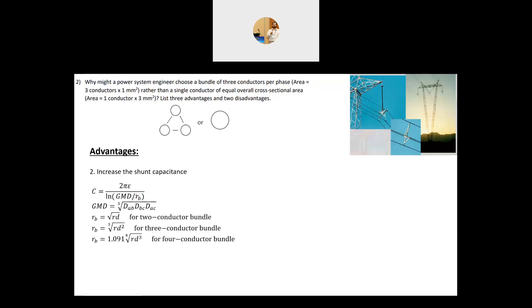The capacitance is 2 pi epsilon divided by ln GMD divided by RB, the radius of the bundle. Here we use the radius. In the inductance, we use something called the geometric mean radius. They are a little bit different than each other. Hopefully in a different question, I will discuss the difference between these two.